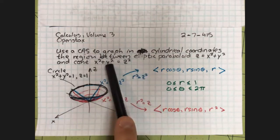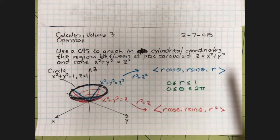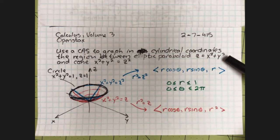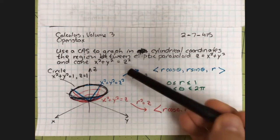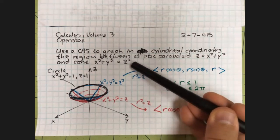Use a computer algebra system to graph in cylindrical coordinates the region between the elliptic paraboloid z equals x squared plus y squared, and the cone z squared equals x squared plus y squared.